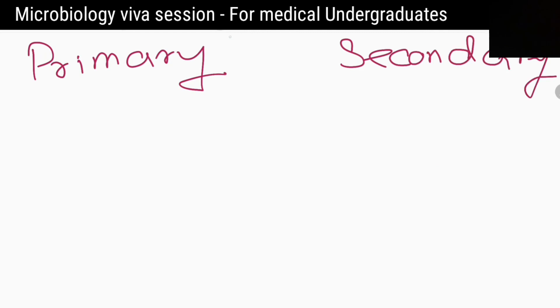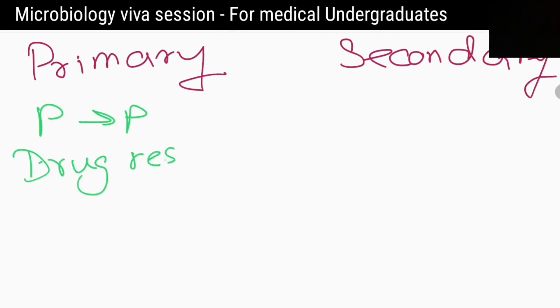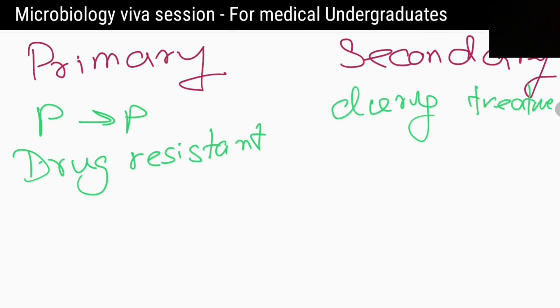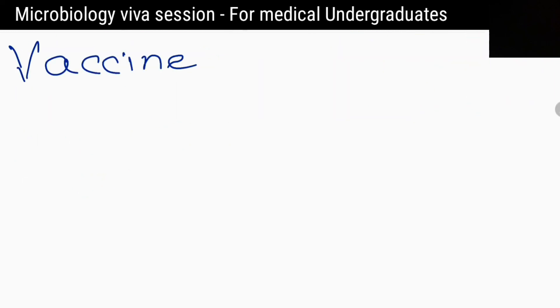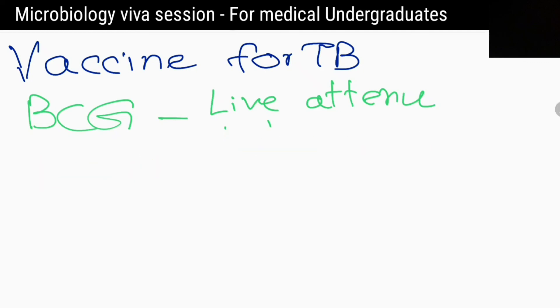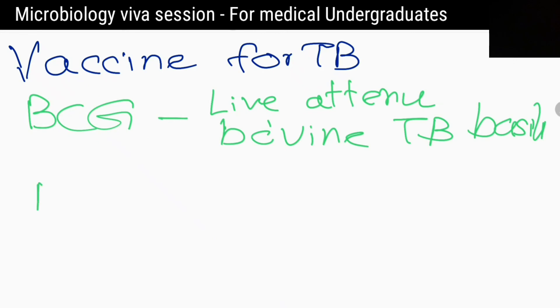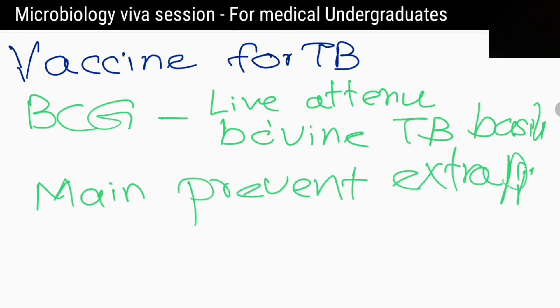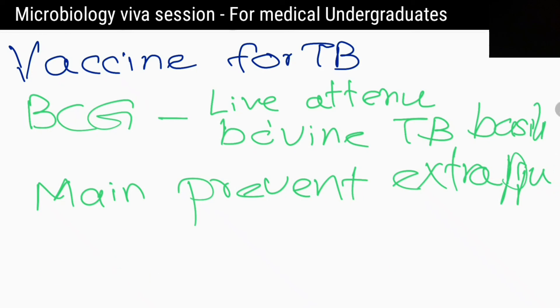What are the other types of drug-resistant tuberculosis? Monoresistant, polyresistant, and extensively drug-resistant. What about primary and secondary resistance? Primary resistance is caused by person-to-person transmission of drug-resistant organisms. Secondary resistance develops during treatment when the treatment is inappropriate or when the patient did not follow the regimen.